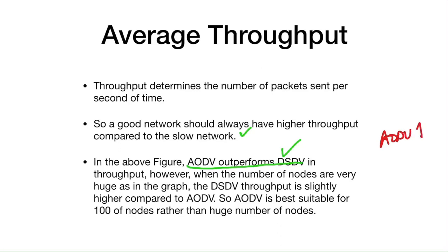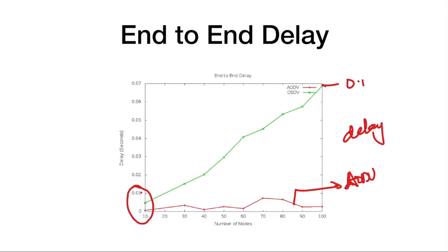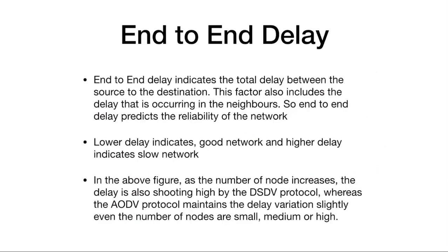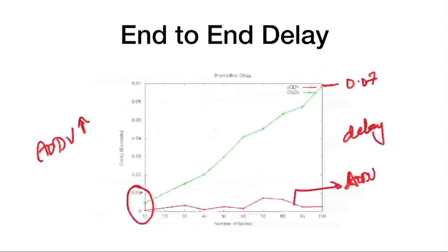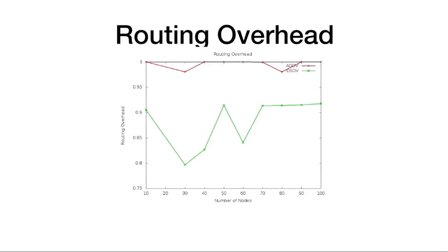For end-to-end delay — which should be low for a good network — AODV (red) shows delay ranging from 0 to 0.1 seconds, while DSDV (green) reaches up to 0.07 seconds but with larger variation. AODV outperforms DSDV in delay. AODV maintains slight delay variation regardless of whether the number of nodes is small, medium, or high, whereas DSDV shows a huge variation with changing node counts.